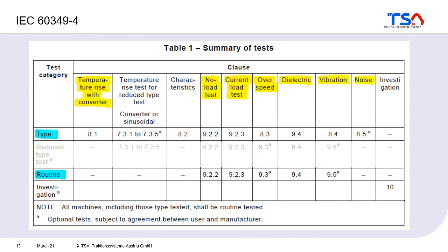The standard specifies which tests should be performed. First is a temperature rise test with a converter. To confirm electromagnetic performance, a no-load test and a current load test are conducted — these are also part of routine tests. To confirm mechanical integrity, an overspeed test is done. Insulation is checked via a dielectric test. Additionally, the machine must be checked for vibration — measuring vibration velocity — and for noise.